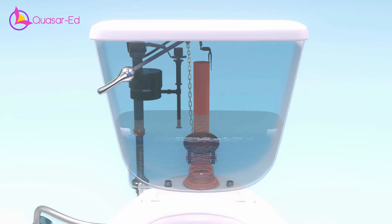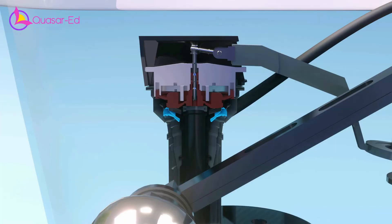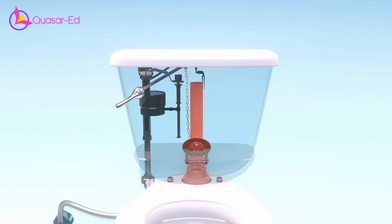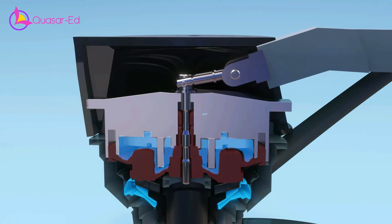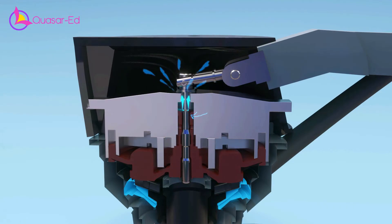At the same time, the float also gets lower along with the water level. The lowering of the float raised the steel pin inside the diaphragm. At the end of the flash, the float is at its lowest point and the narrow section of the steel pin aligns with the diaphragm holes. At that moment, the high pressure water that trapped over the diaphragm releases from the diaphragm hole.